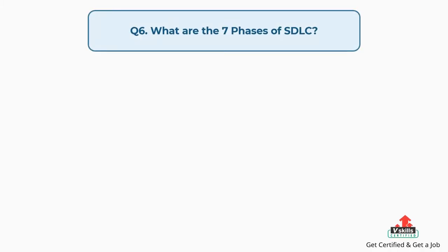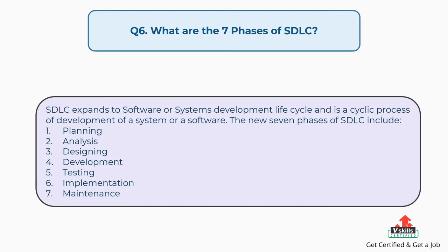Question number six: what are the seven phases of SDLC? SDLC expands to Software or Systems Development Life Cycle and is a cyclic process of development of a system or software. The seven phases of SDLC include: planning, analysis, designing, development, testing, implementation, and maintenance.